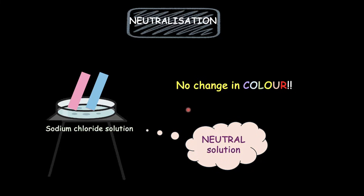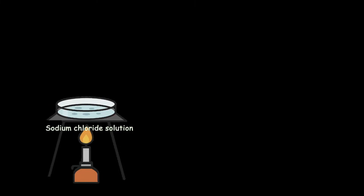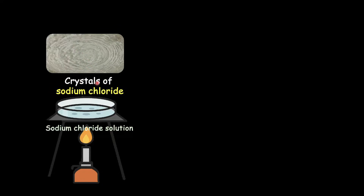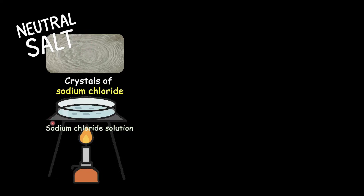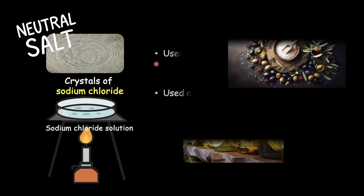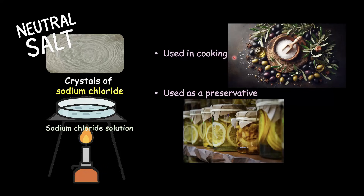And if you go one step further and decide to heat the salt solution, firstly all the water in it would evaporate and boil off, until eventually we are left with white crystals of sodium chloride salt. This is common salt — a neutral salt. We obtained this by heating a neutral solution of sodium chloride, and it is this neutral salt that we use extensively in cooking and also as a preservative to keep our food from spoiling.